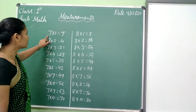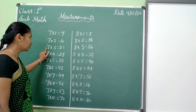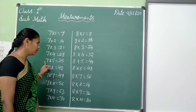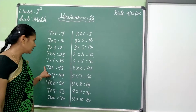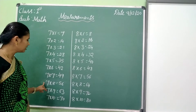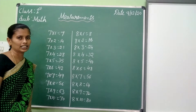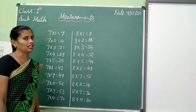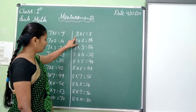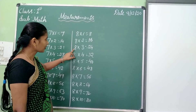Once again — seven ones are seven, seven twos are fourteen, seven threes are twenty-one, seven fours are twenty-eight, seven fives are thirty-five, seven sixes are forty-two, seven sevens are forty-nine, seven eights are fifty-six, seven nines are sixty-three, seven tens are seventy. Now eight ones are eight, eight twos are sixteen, eight threes are twenty-four, eight fours are thirty-two, eight fives are forty, eight sixes are forty-eight, eight sevens are fifty-six, eight eights are sixty-four, eight nines are seventy-two, eight tens are eighty.